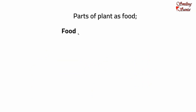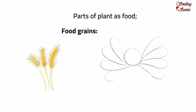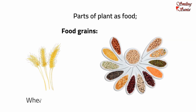Plants give us food grains. Cereals and pulses are called food grains. The most widely used cereals are rice, wheat and maize.